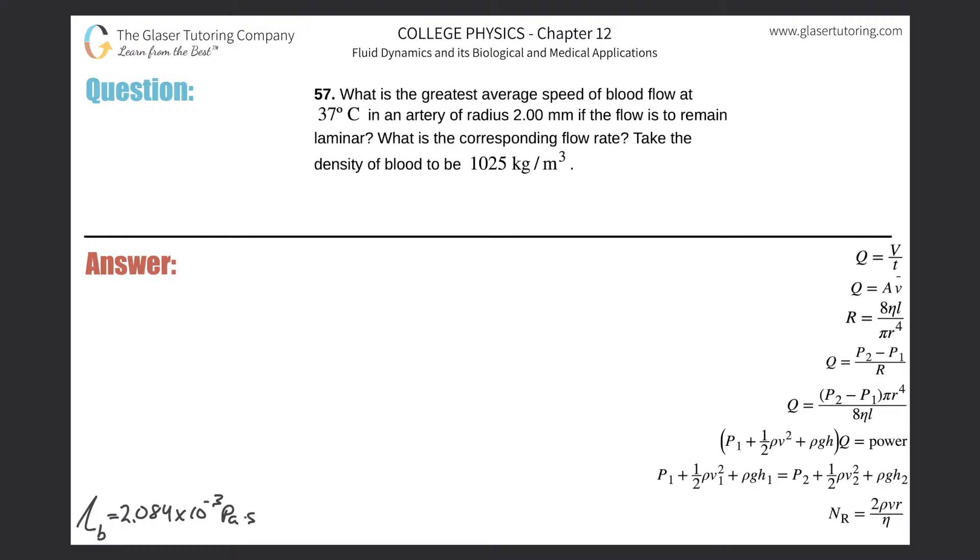Number 57: What is the greatest average speed of blood flow at 37 degrees Celsius in an artery of radius 2 millimeters if the flow is to remain laminar? What is the corresponding flow rate? Take the density of blood to be 1025 kilograms per cubic meter.